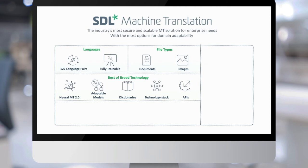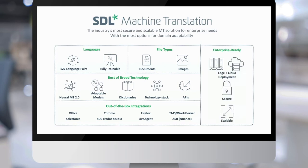We have a complete technology framework developed by SDL. We rely on Neural Machine Translation 2.0, adaptable models, dictionaries, rich APIs — a solid enterprise foundation. We have tons of out-of-the-box integrations to weave into your workflow, and it's an enterprise-ready solution with flexible deployment options. Our Edge-Cloud deployment architecture means you can do any kind of deployment model you want, secure and scalable.